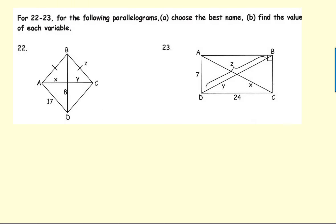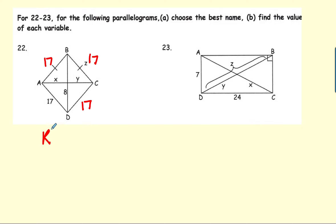Let's take a look at the following parallelograms and choose the best name. It looks like two consecutive sides are congruent here — this is 7 and this is 17. Remember, this is a parallelogram, so opposite sides are congruent. So now I know this is a rhombus. Then it says find the value.